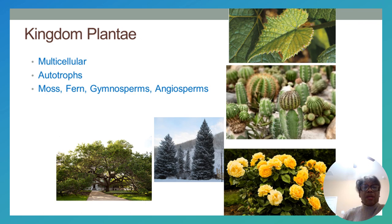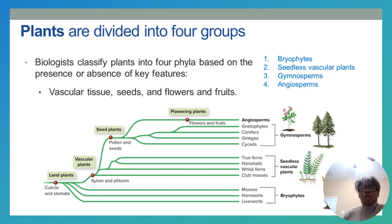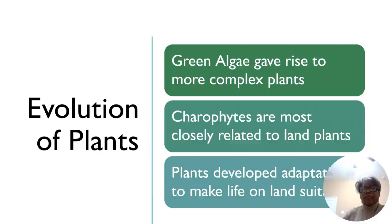Plants are multicellular organisms and autotrophs — they are producers. Examples include mosses, ferns, gymnosperms, and angiosperms, which we'll discuss in more detail shortly. Plants are divided into four general categories based upon the presence or absence of certain key features: bryophytes, seedless vascular plants, gymnosperms, and angiosperms.